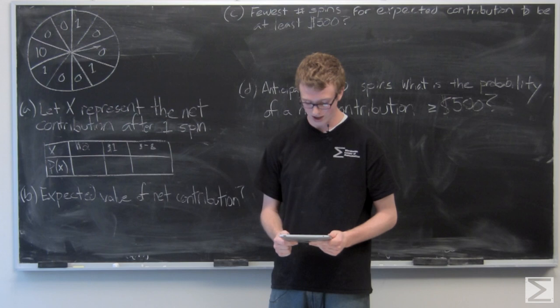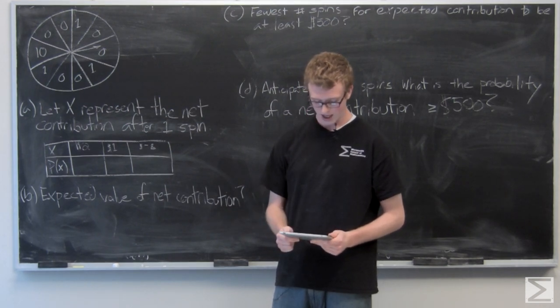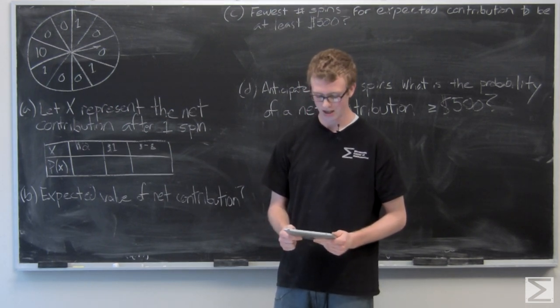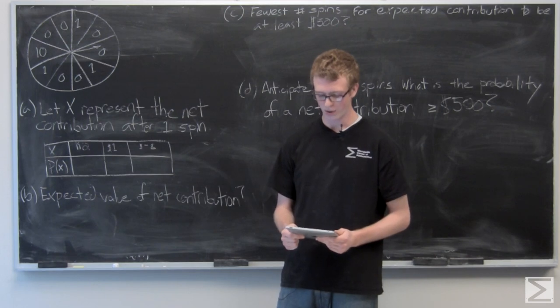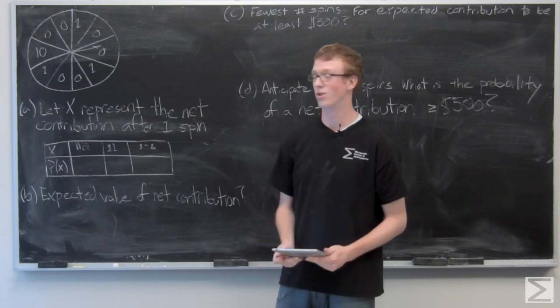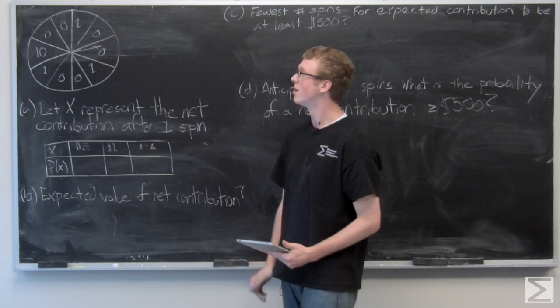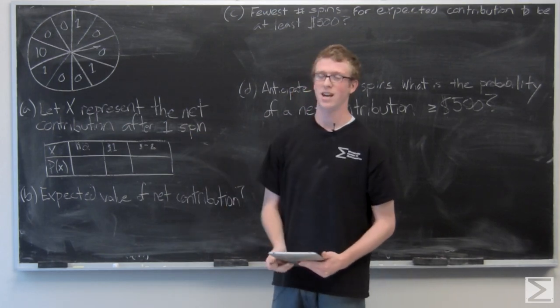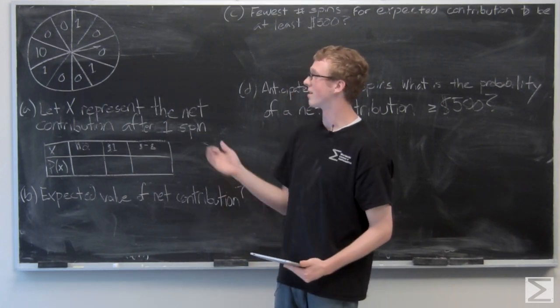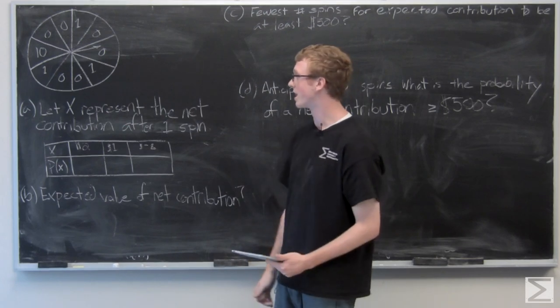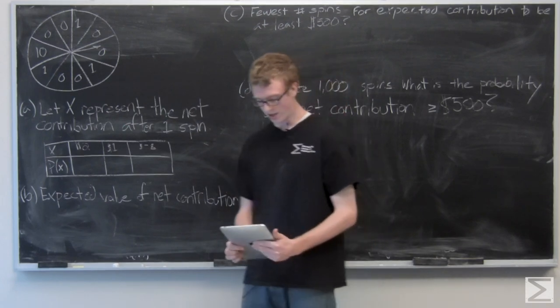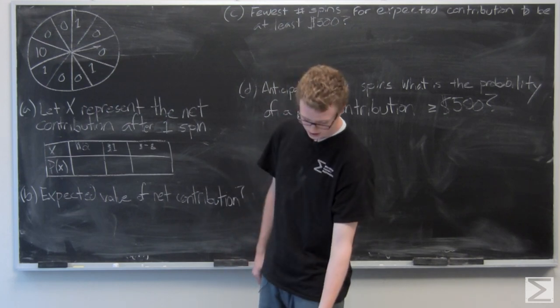For each $2 donation, a player spins the pointer and receives the amount of money indicated in the sector where the pointer lands on the wheel. The spinner has an equal probability of landing in each of the 10 zones. So you're paying $2 to play this game. Unless you hit the 10, you're actually paying at least $1, most likely $2, to play the game.